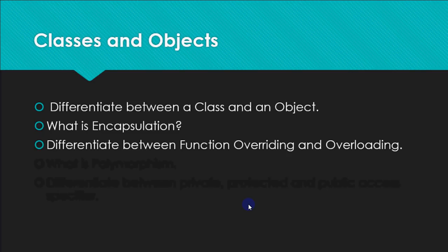You might also be asked to differentiate between function overriding and overloading. Function overloading is when you have more than one function in the same program with the same name, but they are distinguished by the number or type of arguments passed — that's called overloading. Function overriding is specifically used in inheritance, where one function exists in the base class and one in the derived class. The name and the number and type of arguments are the same, but one is in the base class and one is in the derived class.